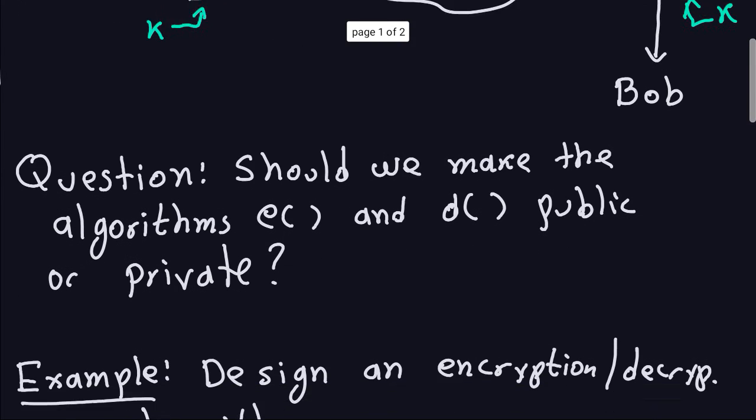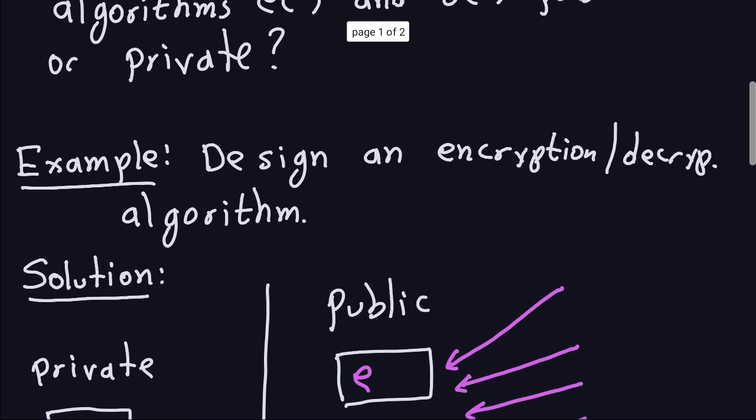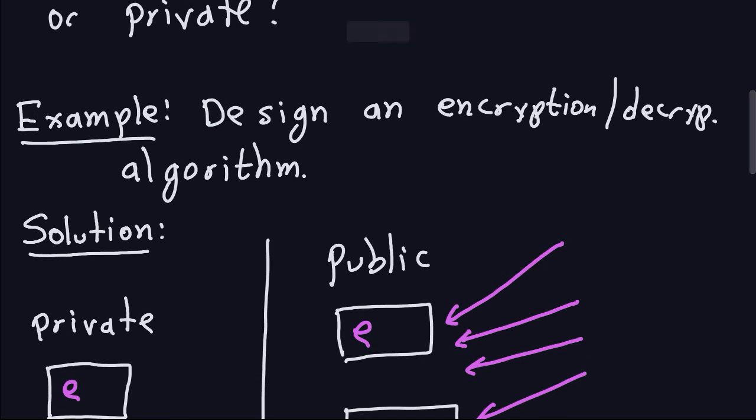Suppose, for example, I give you this assignment. I tell you: design an encryption and decryption algorithm by yourself. I give you, let's say, a week or so. You might decide to use the ciphers that you have—for example, the Caesar cipher, then you apply substitution, then you do columnar transposition. You might do a lot of things, maybe something very creative.